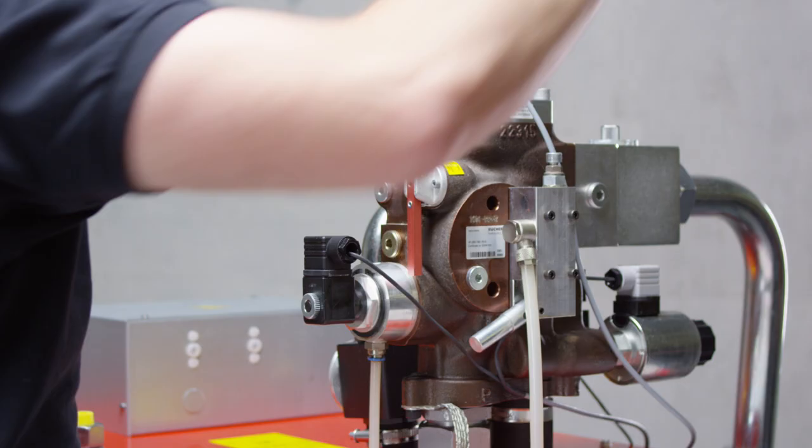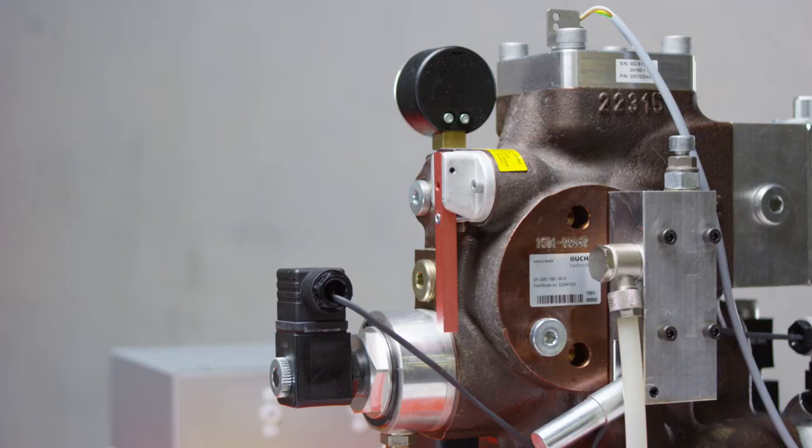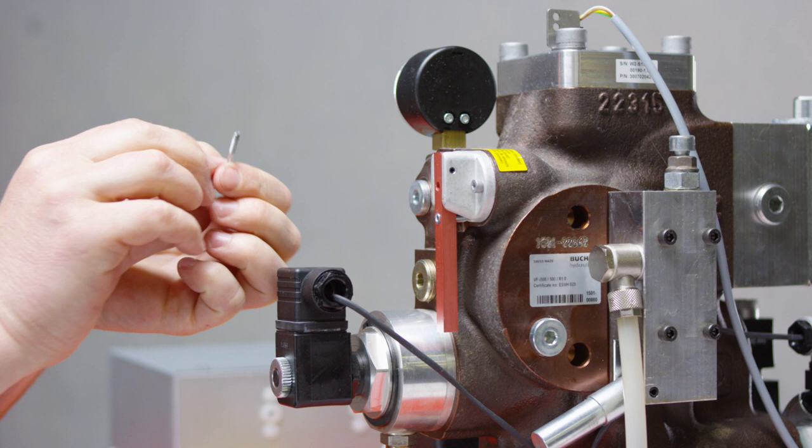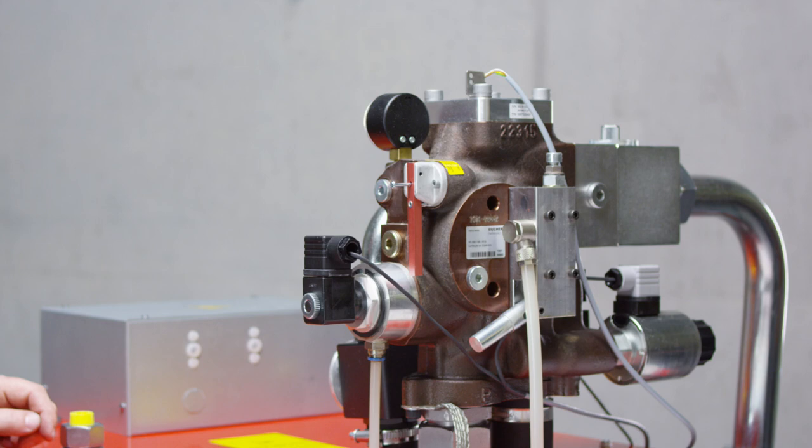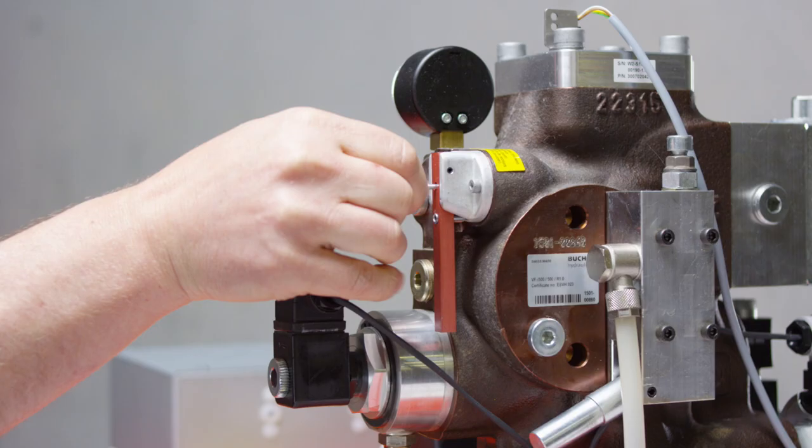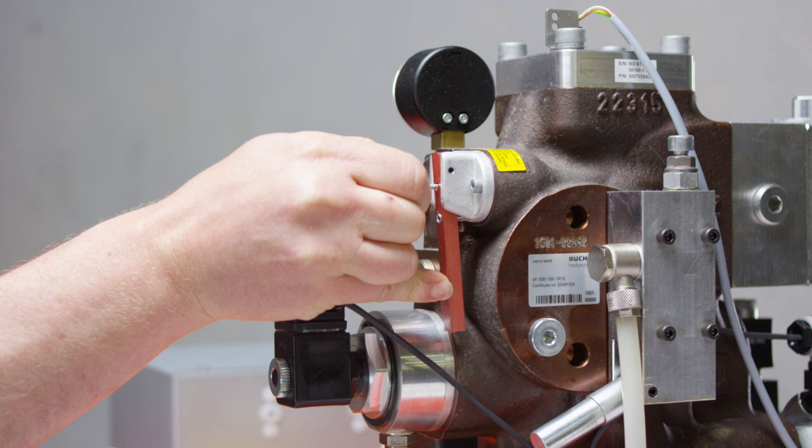Remove the M3 screw from the solenoid plug. Screw it into the opening of the lever of the emergency lowering. Pull the M3 screw and simultaneously press the lever of the emergency lowering until the pressure is completely released.